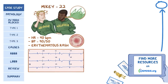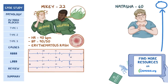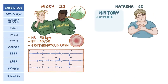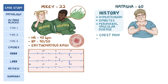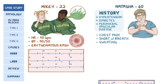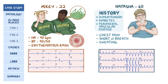His ECG is as follows. Natasha is a 60-year-old female with chronic hypertension, diabetes, and peripheral vascular disease who comes to the emergency room complaining of sudden-onset squeezing retrosternal chest pain accompanied by shortness of breath and sweating. Her ECG is as follows. On laboratory evaluation, her troponin levels are significantly elevated.